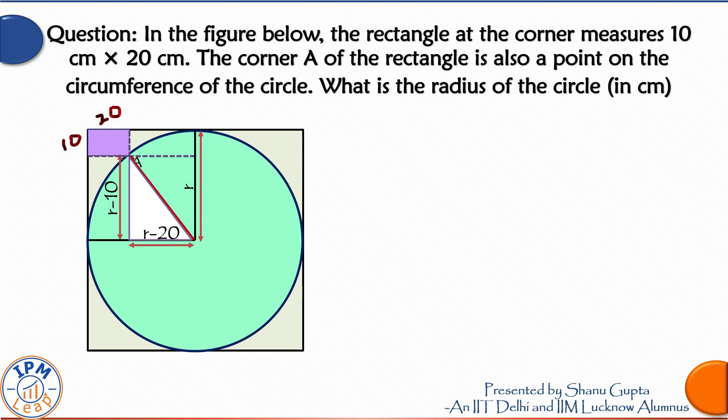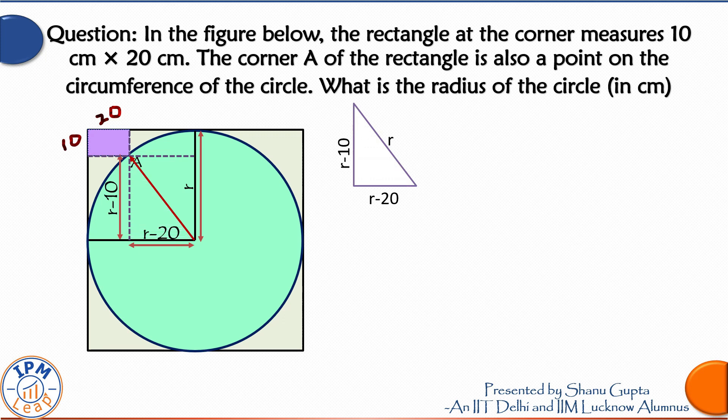So let me draw this rectangle again for your benefit. All three sides we were able to express in terms of R. Now if we apply the Pythagorean theorem for a right angle triangle, we will get an equation in R. Sum of the squares of the two smaller sides is equal to square of the hypotenuse.